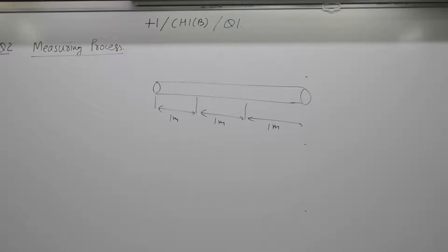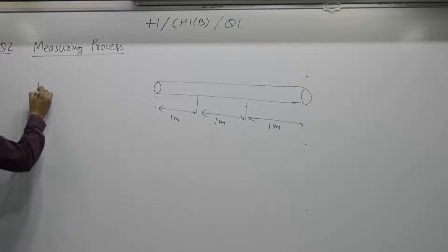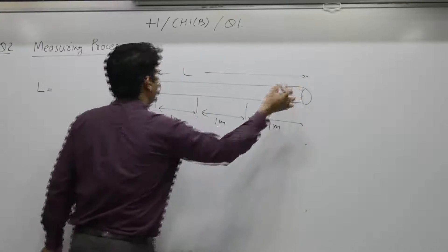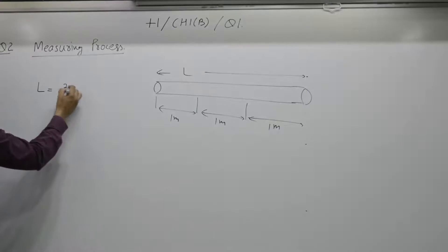First of all, unit is chosen for measuring the process. Secondly, measuring process is carried out to find how many such units are equal to given length or area. Example number 1: units say meter. How many such units make 1 rod? Yes, 3. So length of the rod, L is equal to 3 meters.